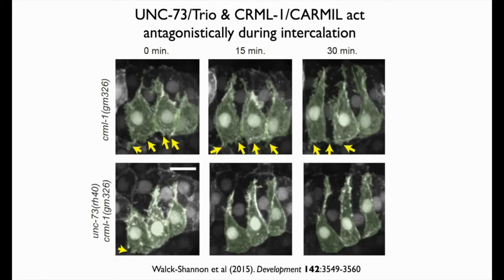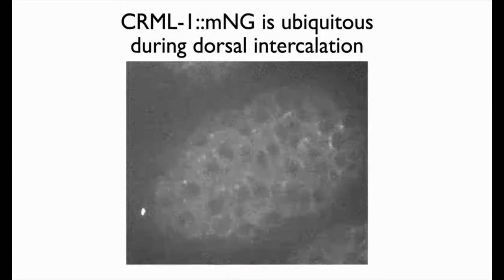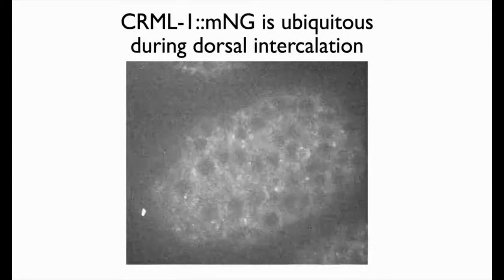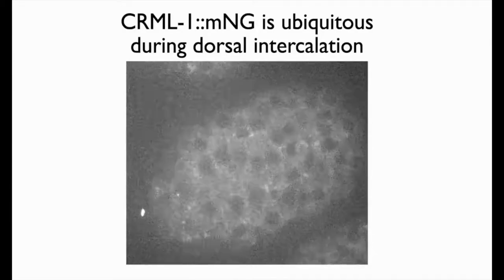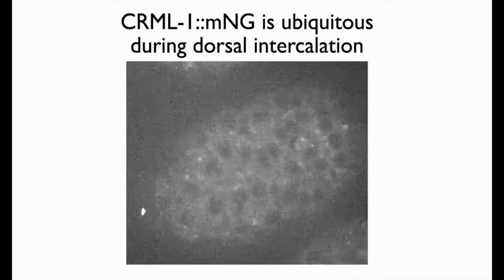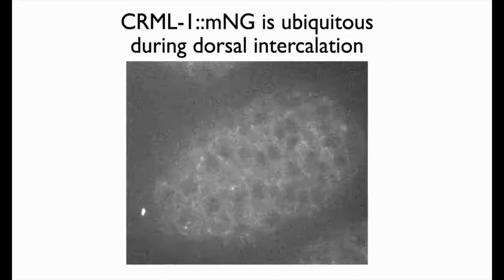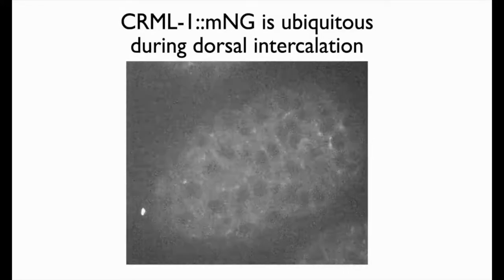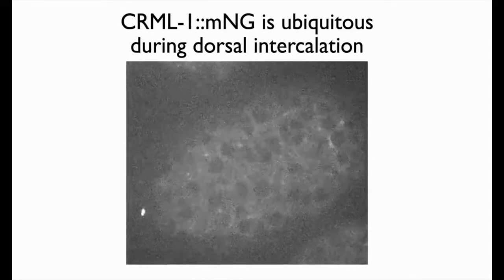We were keen to know whether CARMIL-1 was asymmetrically accumulated in cells, which might explain its mechanism of action. Joel Sear made a CRISPR-based mNeonGreen knock-in for CARMIL-1 and Anna Hekstad imaged it. This movie shows that CARMIL-1 is present in dorsal cells but seems to be ubiquitous — there's no obvious smoking gun in terms of asymmetric localization, and we're analyzing this in higher detail. One of the things cut short by COVID-19 was our ability to use the new Dragonfly system to image CARMIL-1-mNeonGreen at high resolution.